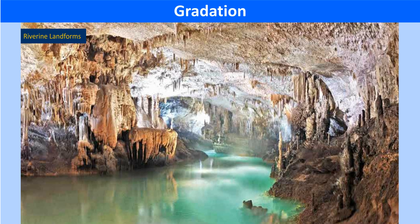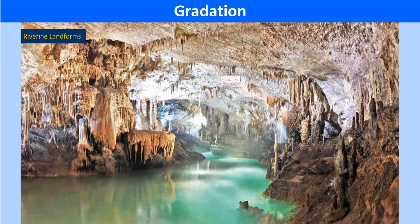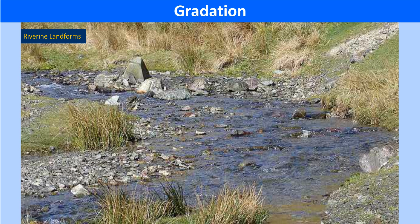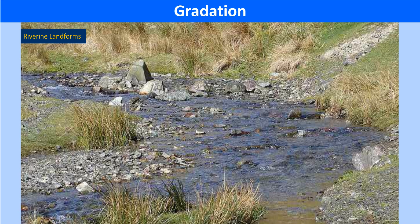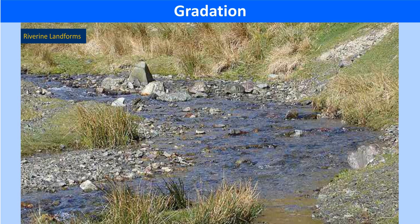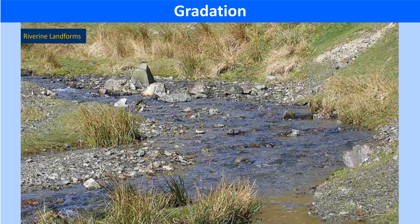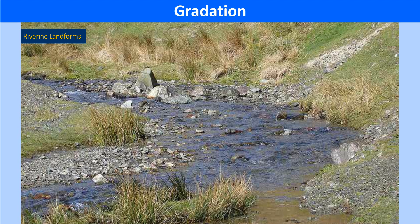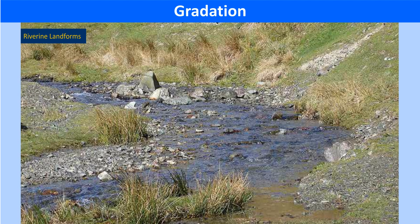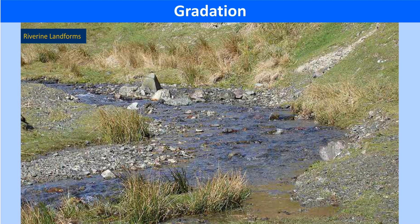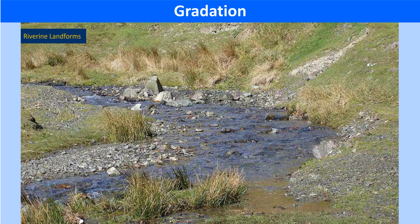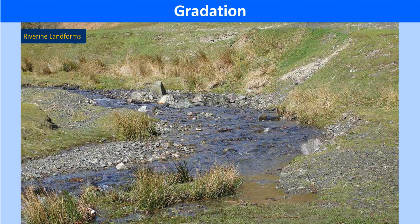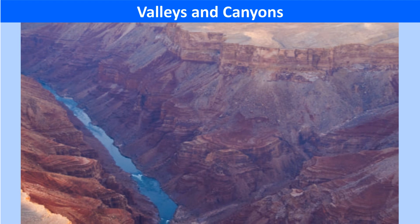The source or origin of a river is in the hilly or mountainous regions, known as the upper course, wherein it flows along a path from the mountains to the low-lying plains, finally joining the sea or ocean, which is known as the mouth of a river. During its journey, a river performs the task of erosion, deposition, and transportation, as well as formation of several landforms contingent on the volume of water, slope of land, and materials carried by it.